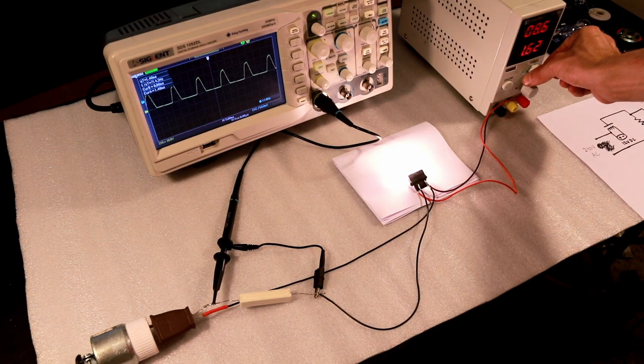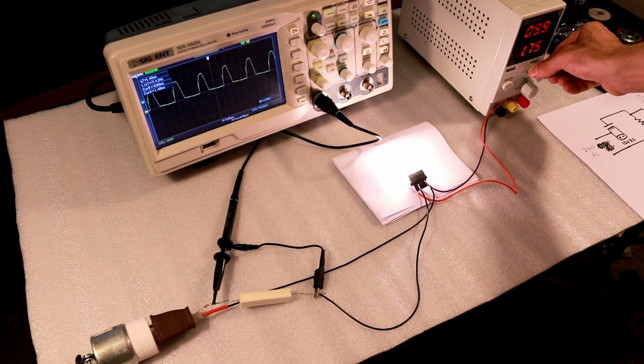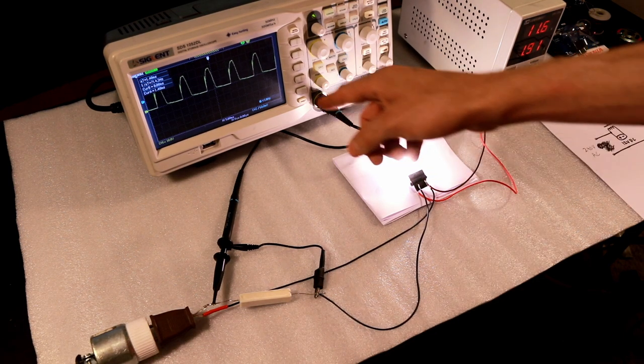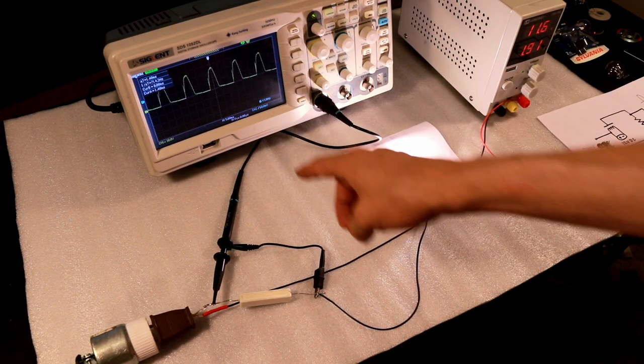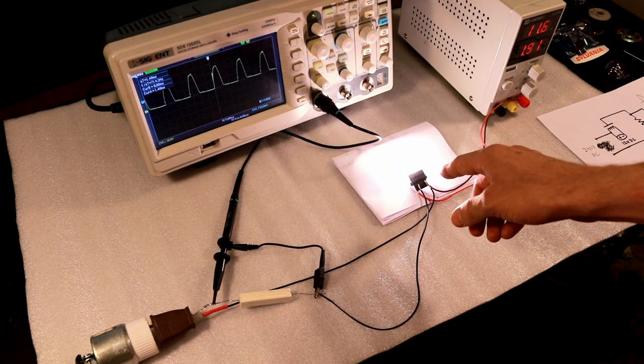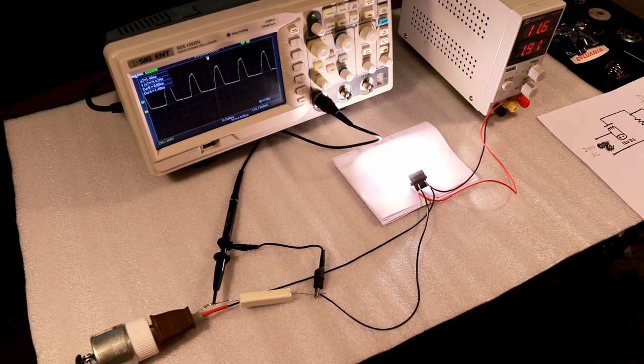If we continue to turn up the voltage, we'll see we get even better rectification with less voltage drop. So there it is. We're actually able to generate quite a sizable amount of rectified current using just this simple light bulb technique. Let's go ahead and make one more modification to the circuit to make it a little bit more practical before we conclude this experiment.